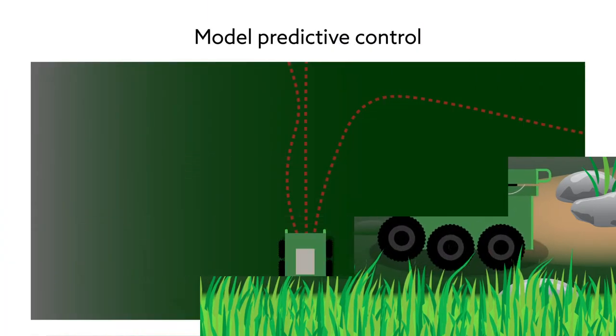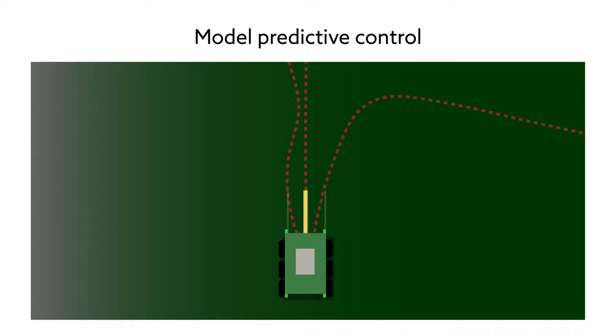Model Predictive Control tracks all these factors on the fly to ensure the robot travels along the most efficient route.